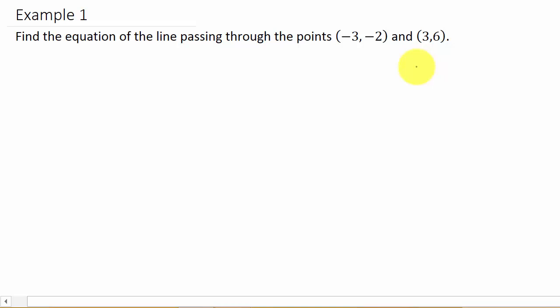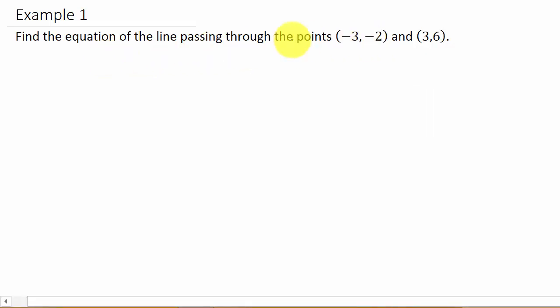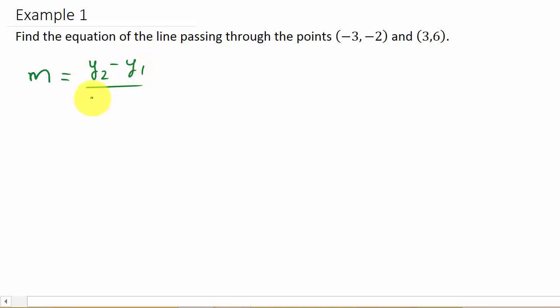To find the equation of a line, you need two things: you need the slope of the line, and you need a point on the line. They don't give us the slope here, but they do give us two points that it passes through. So if you remember, to find the slope of a line passing through two points, we have this formula here.